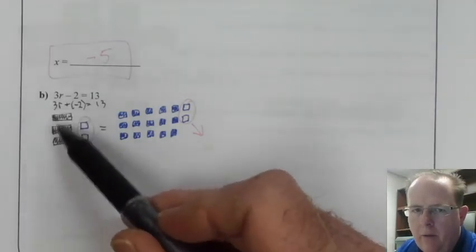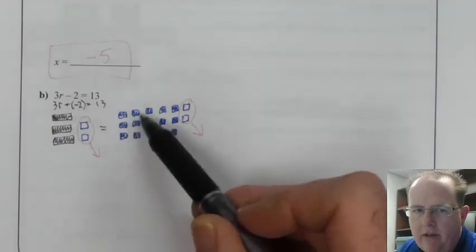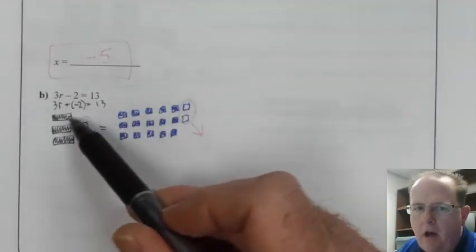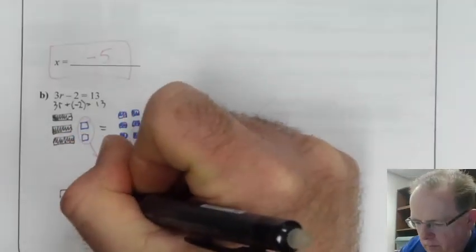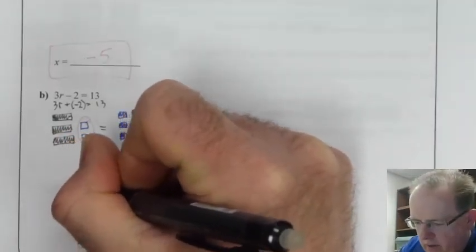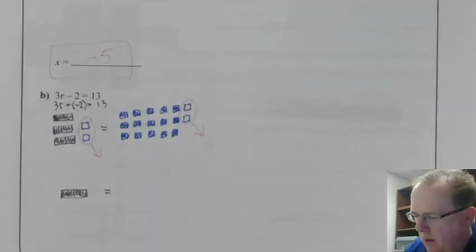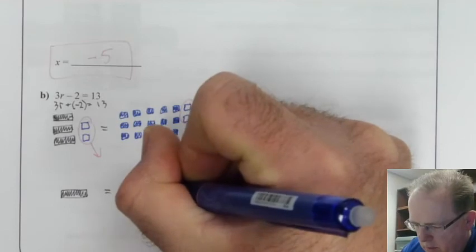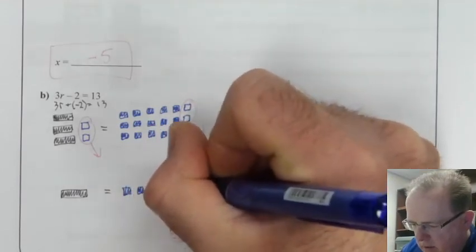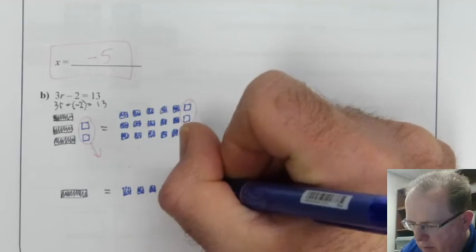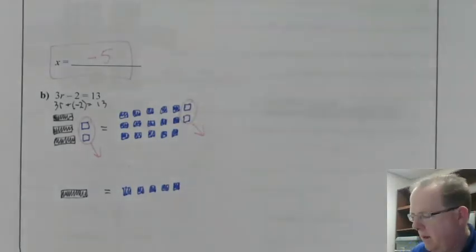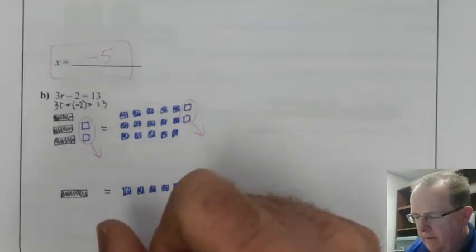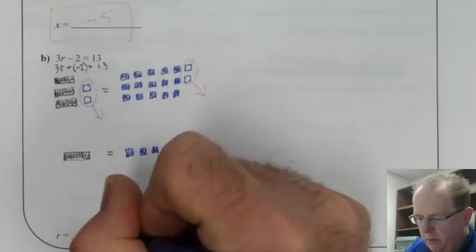Now, the way I've got this drawn out, I've actually got them stacked in threes. So if I just take a look at this top row, just to speed things up with the drawing, my top row, which is identical to the second row and the third row, looks like this. So that means R equals 5. R equals positive 5.